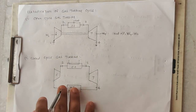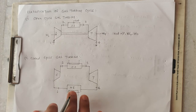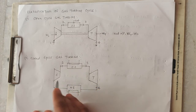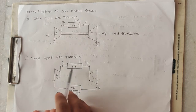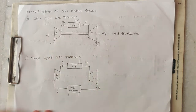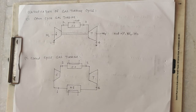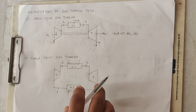Now let's talk about the closed cycle gas turbine. In the closed cycle gas turbine, the same three parts — compressor, combustion chamber, and turbine — are present as in the open cycle, but we need one extra part, which is a heat exchanger.